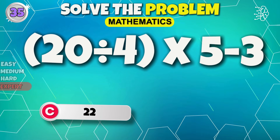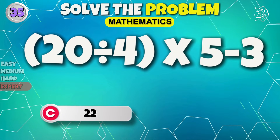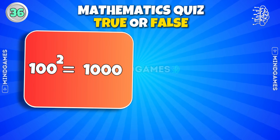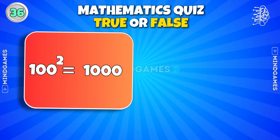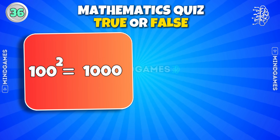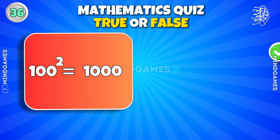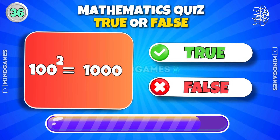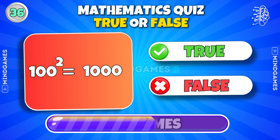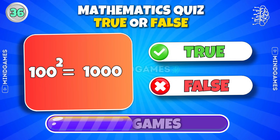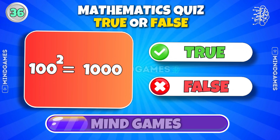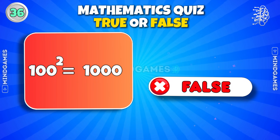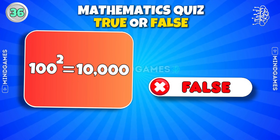It's 22. Square of 100 is 1000. True or false? It's false — correct answer is 10,000.